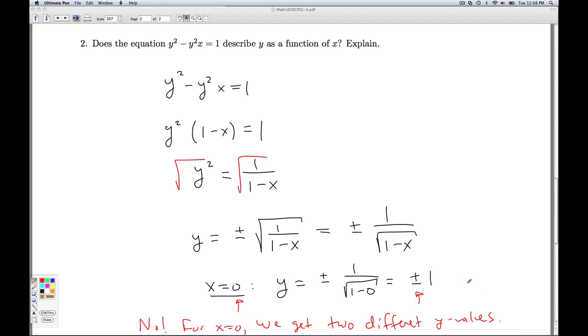Something you can do in the privacy of your own home is to actually graph these equations in the calculator, like we talked about earlier, and see that this, in fact, will violate the vertical line test. So it's a way to kind of put all these concepts together. Regardless, that's it for number 2, and that'll do it for checkpoint quiz 1.4.